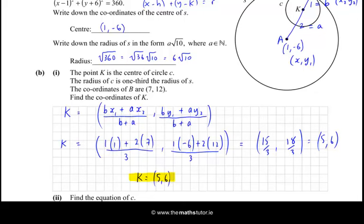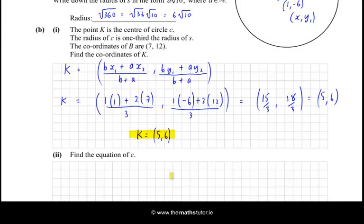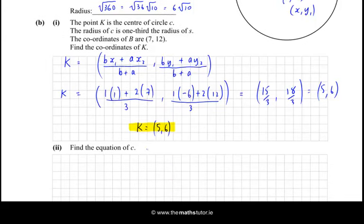And finally, we can now form the equation of C. What do we know about the equation of C? Well, we know it has centre (5, 6), but we also know that its radius is one-third of the radius of S, and the radius of S is 6√10, so radius is 6√10.